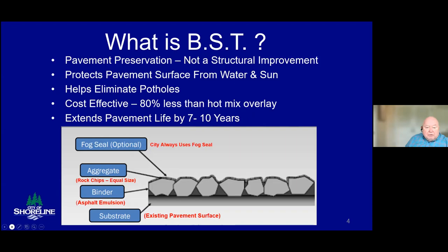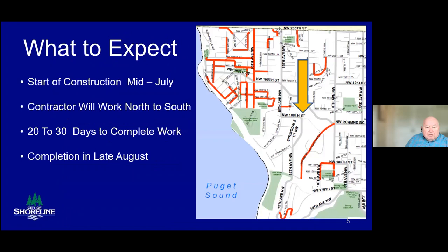In general, you should expect construction to start in mid to late July, possibly just a few days from now. We're completing contracting formalities with the contractor, and they plan to go to work just as soon as that is done. The contractor, Doolittle Construction, will begin work on the most northerly streets up by 205th, down along 20th Avenue, and so on, doing groups of three or four streets at a time, working south through the streets around Cayu-Cayu and Saltwater Parks, and then on down to Enos Arden. The whole project, end to end, will take around 20 to 30 calendar days to complete, with any additional sweeping or cleanup finished in the latter part of August.